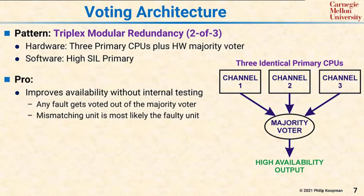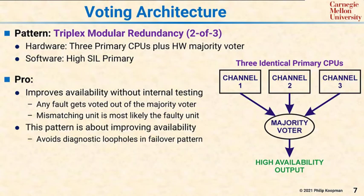The pro for this pattern is that it improves availability without having to do internal testing of any of the channels. Any single fault gets voted out by the majority voter, and any mismatching unit is determined to be the faulty unit, as that is the most likely situation. It avoids diagnostic loopholes seen in a failover pattern by always taking three and comparing them.